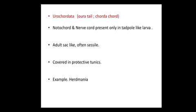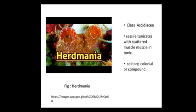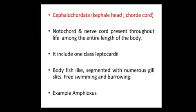These organisms are covered in a protective tunic, which is the outer covering of the body. The example is Herdmania. It is included in class Ascidiacea — a solitary tunicate with scattered muscle in the tunic, which can be solitary, colonial, or compound.